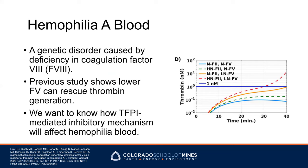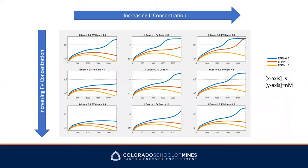Next, we studied hemophilia A blood with this model. Hemophilia A is a genetic disorder caused by deficiency in coagulation factor VIII. Previous studies show that lower factor V can rescue thrombin generation, and such rescue is amplified with higher prothrombin concentration. We want to know how these newly added reactions change these observations. In these figures, prothrombin increases from left to right, factor V increases from top to bottom, and blue, red, and yellow curves represent TFPI levels of 50%, 100%, and 150%. Factor VIII concentration is fixed at 1% to recreate hemophilia A blood. The red line in the middle figure represents a normal hemophilia A blood case, which does not reach a thrombin generation burst.